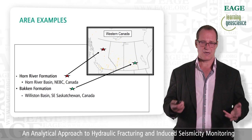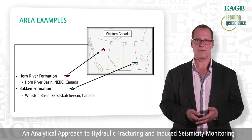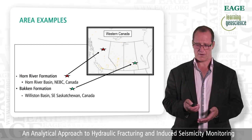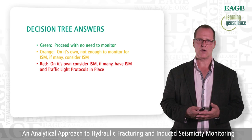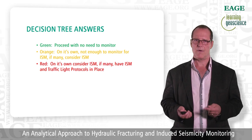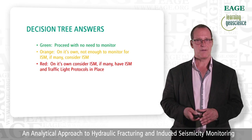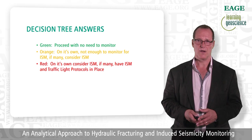Now I'm going to give you two examples from Western Canada that illustrate these points. One comes from the Horn River Formation in Northeast BC, and the other from the Bakken Formation in Saskatchewan. When I show you the decision tree answers: green means you can proceed with no need to monitor; orange is okay on its own but not enough to warrant monitoring — though many oranges together might; red on its own means consider monitoring, and many reds means you should have induced seismicity monitoring with a traffic light protocol in place.